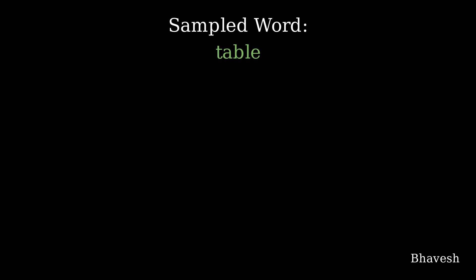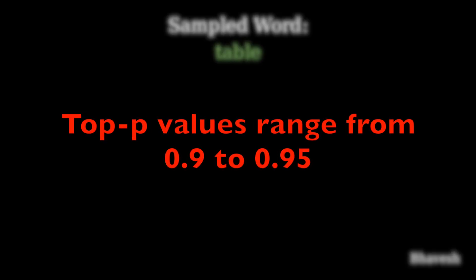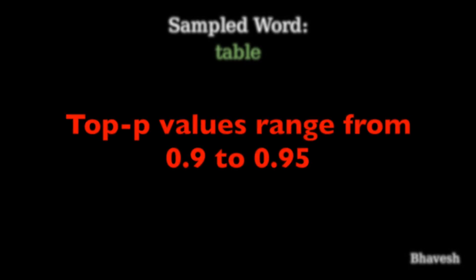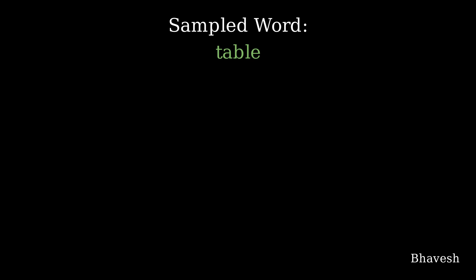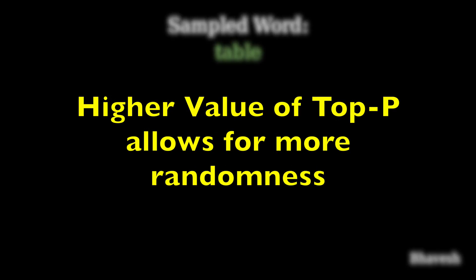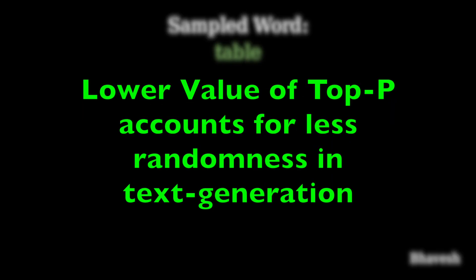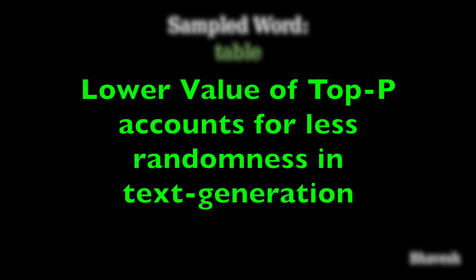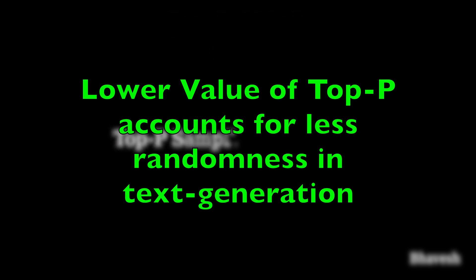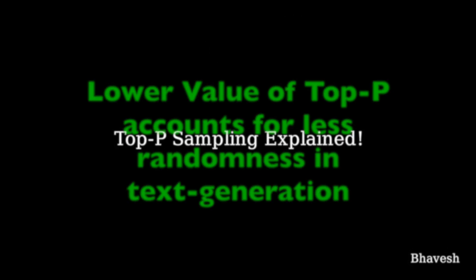Top-P typically ranges from 0.9 to 0.95. A higher Top-P value, closer to 1, allows for more randomness and exploration by the LLM, considering a wider range of words. A lower Top-P value, closer to 0, restricts the LLM to a smaller set of high-probability words, resulting in more conservative and predictable output. You wouldn't have very creative outputs if your Top-P value is very low.